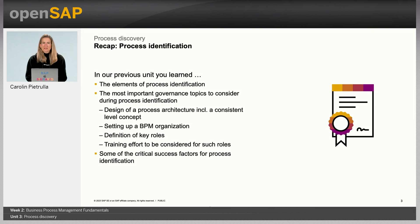In Unit 2, Process Identification, we talked about the two scenarios of process identification: either designing the process architecture of an organization initially, or determining the scope for a process improvement endeavor. We also talked about the most important governance topics, which were the process architecture and the level concept, a meaningful BPM organizational setup, and the definition and training of key roles. We also covered critical success factors of process identification and took a look at how processes are structured at SAP.